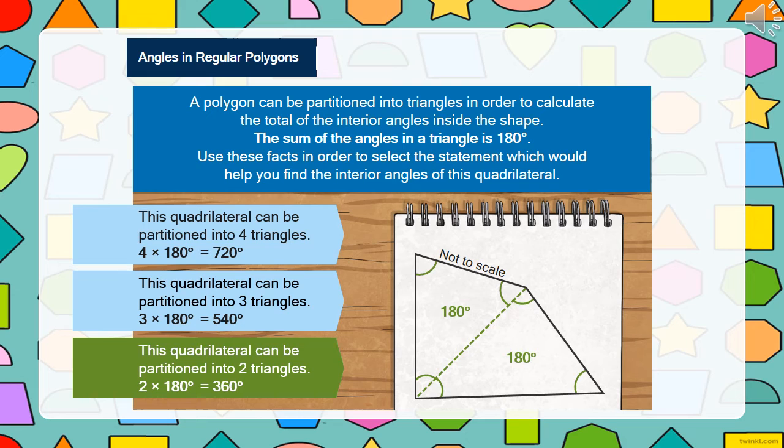Let's look at the angles in a regular polygon. A polygon can be partitioned into triangles in order to calculate the total of the interior angles inside the shape. Remember, the sum of the angles in a triangle is always 180 degrees. Let's use these facts to select the statement which would help you find the interior angles of this quadrilateral.